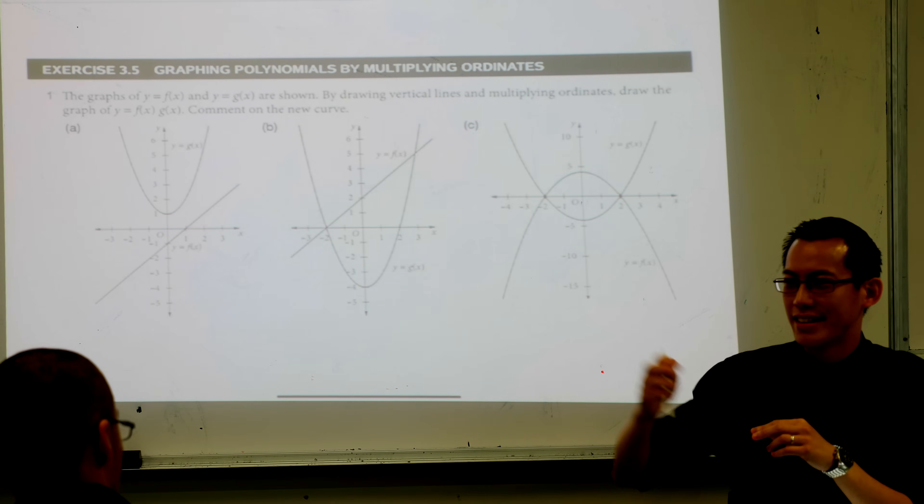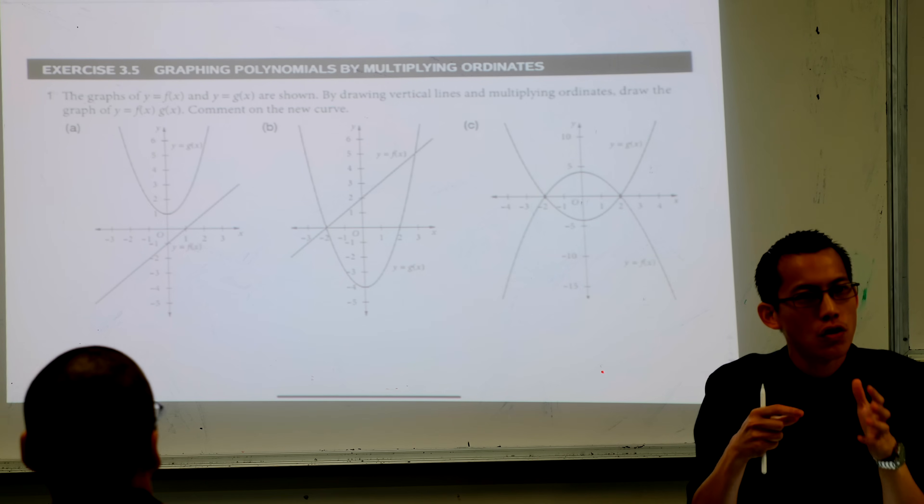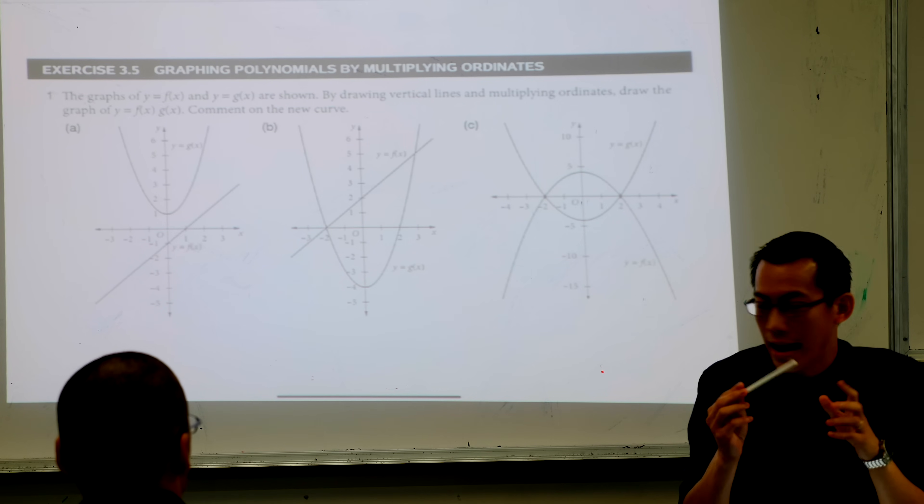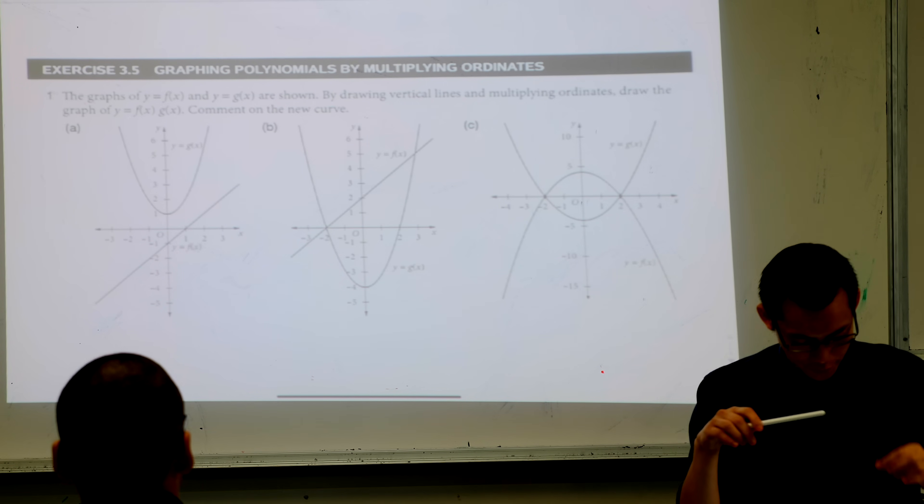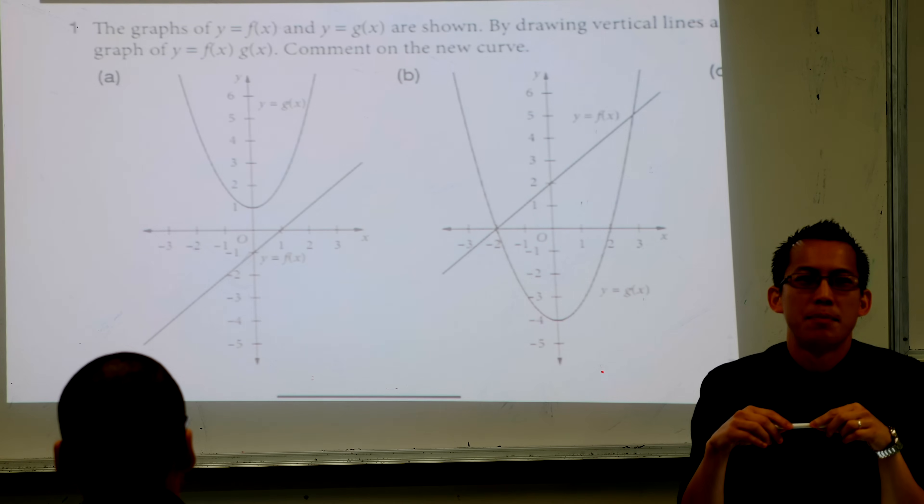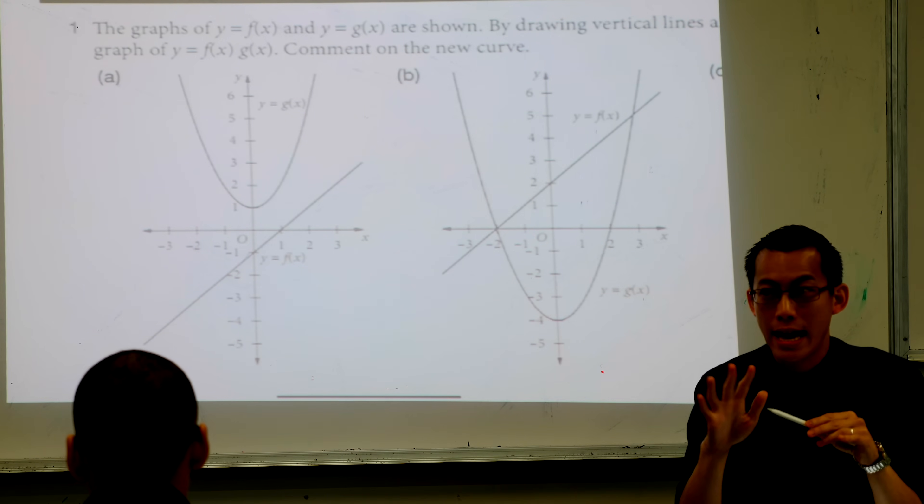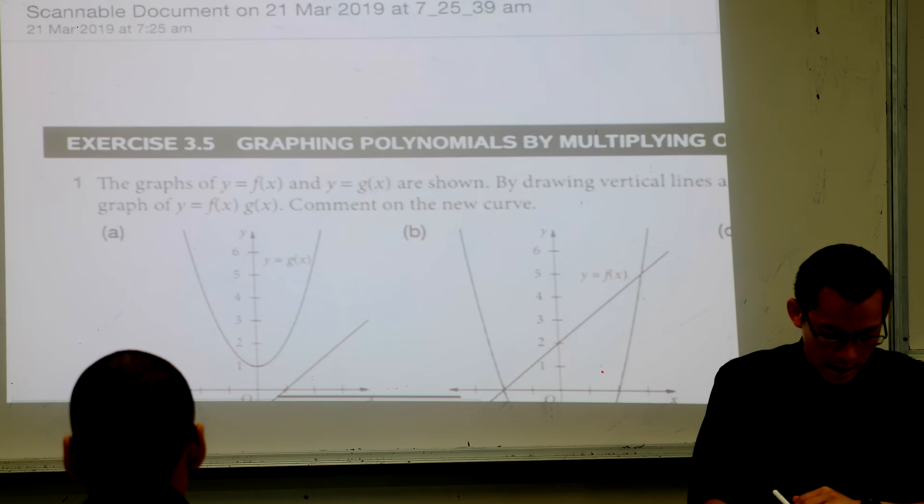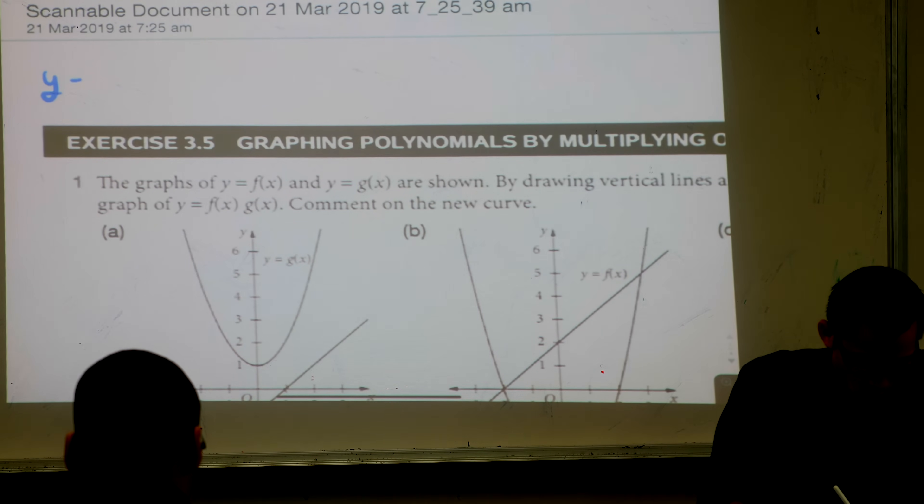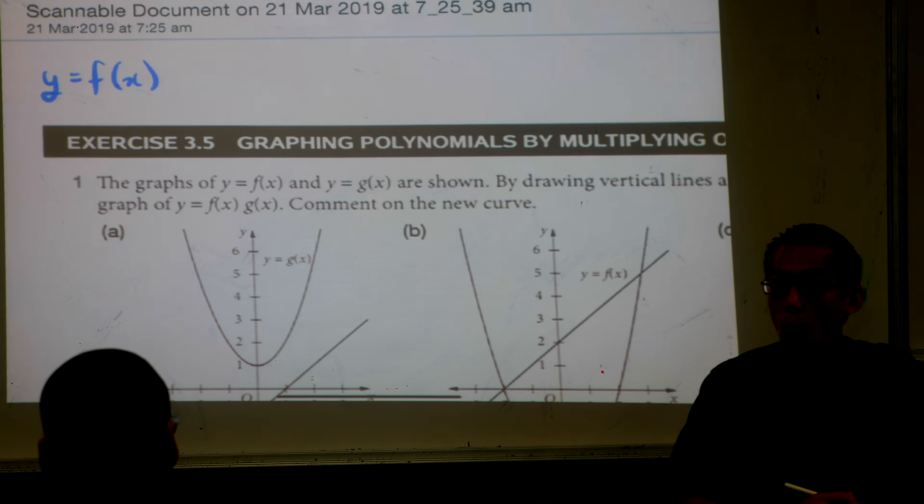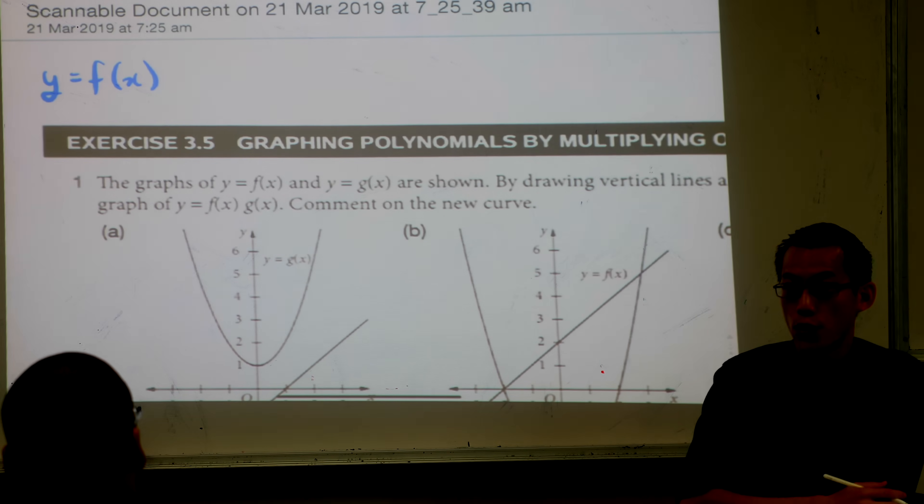We are continuing our look at taking graphs and transforming them and thinking of them in visual terms. But as you can see by the pictures you've got sitting in front of you, we're kind of amping it up a little bit. So far we've looked at, can you help me remember, what kinds of things do we know how to do? If you know what f(x) looks like, what kinds of ways do you know how to transform that?